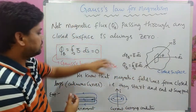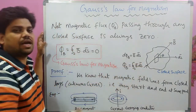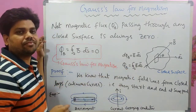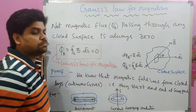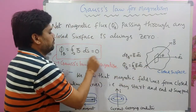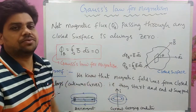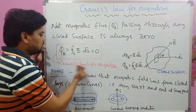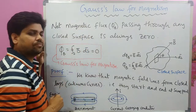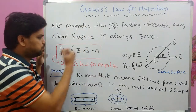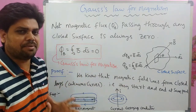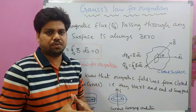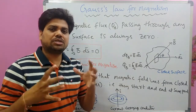What Gauss's Law tells us is that whatever we have calculated using this mathematical equation is vanishing — the total magnetic flux passing through any closed surface is always zero. The proof for Gauss's Law for Magnetism is very simple. We know that magnetic field lines form closed loops; they form closed, continuous curves.